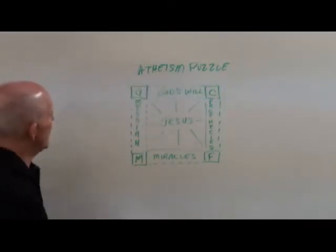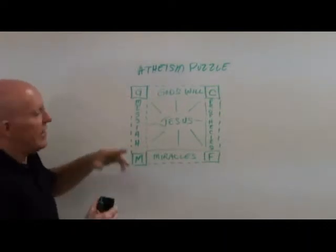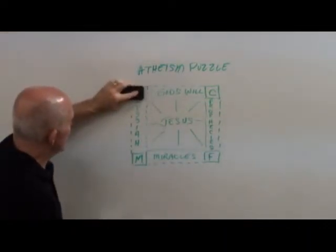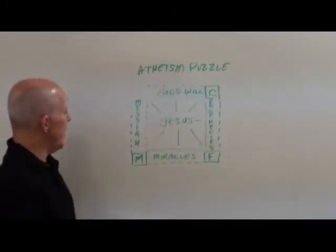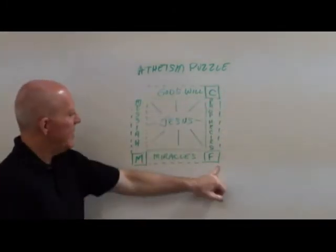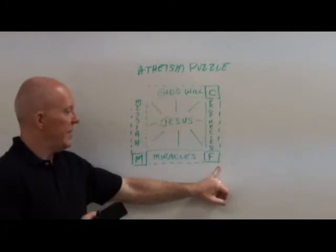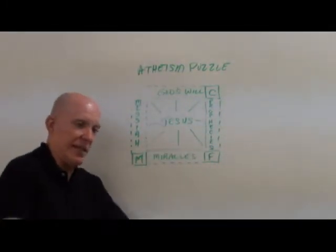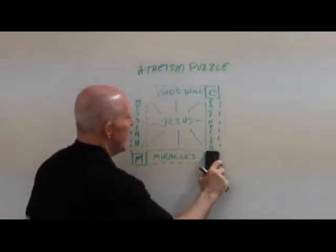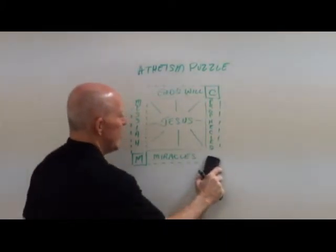Well, we start off with the corner pieces. Atheists don't believe in God, so that piece has to go right there. That one disappears. They certainly believe in creation. They do believe in mankind. But they don't believe in a literal fall because they usually believe in evolution and things like that, and things are evolving. Things are actually getting better instead of getting worse. And so that piece disappears from the puzzle.